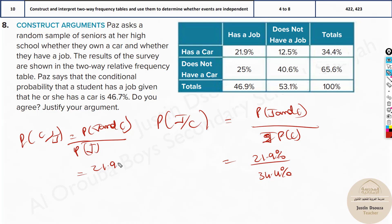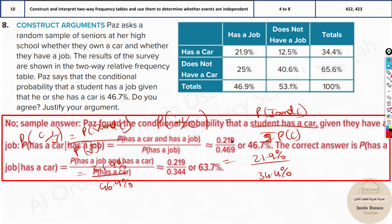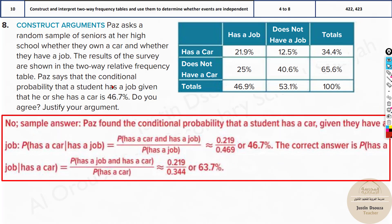So now the first value is same, 21.9%, but over here instead of taking this value, she has taken the job value, that is 46.9%. And then when you solve this, you must get 46.7%. You can see over here, when you solve this, you're getting 46.7%. That is the mistake which Paz has done over here.